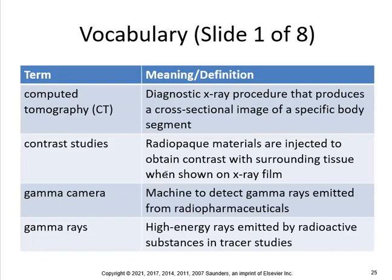Definitely know these key definitions. A CT scan, or computed tomography, is a diagnostic x-ray procedure that produces a cross-sectional image of a specific body segment. In contrast studies, radiopaque materials are injected to obtain contrast with surrounding tissue when shown on an x-ray film. A gamma camera is a machine to detect gamma rays, which are high-energy rays emitted by radioactive substances in tracer studies.